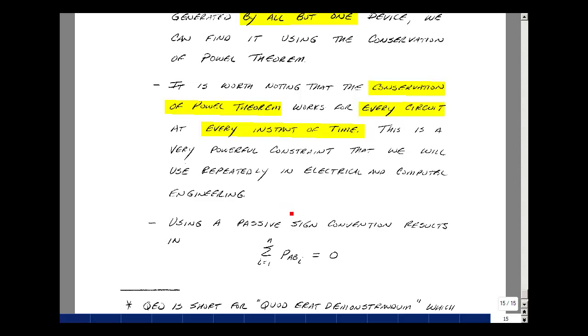One last comment. If we were using just a passive sign convention in our last theorem, then we'd have only elements absorbing power. And that would be that the summation of power absorbed then would be equal to zero. This is handy in proving theorems sometimes to have zero on one side of an equation. Here's some of the properties of the conservation of power.